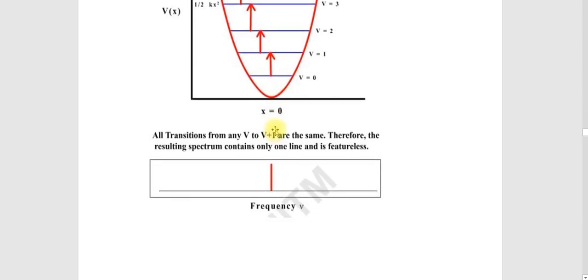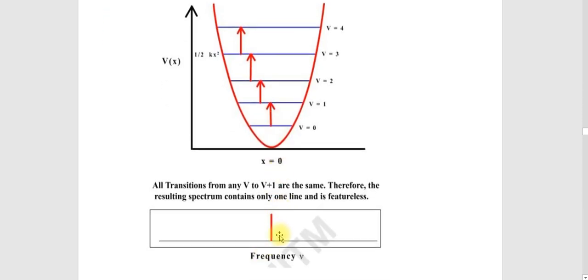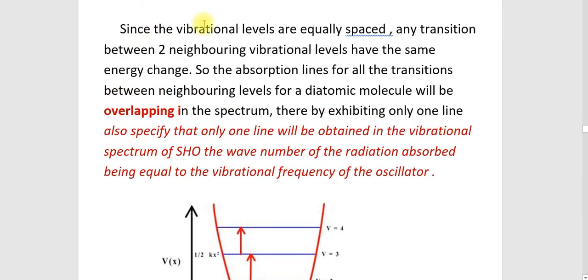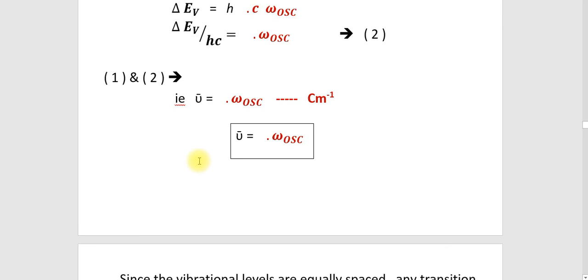Normally, if we have a vibrational spectrum, we have a single line. Since the vibrational levels are equally spaced, any transition between two neighboring vibrational levels has the same energy change. So the absorption line for all transitions between neighboring levels for a diatomic molecule will be overlapping in the spectrum. Therefore they exhibit only one line. Only one line will be obtained in the vibrational spectrum of a simple harmonic oscillator, and the wave number of radiation absorbed will be equal to the vibrational frequency of the oscillator.